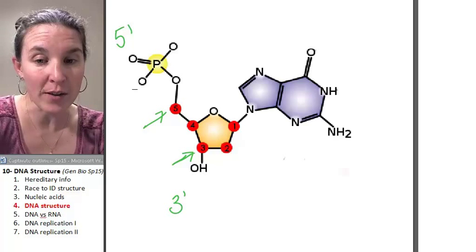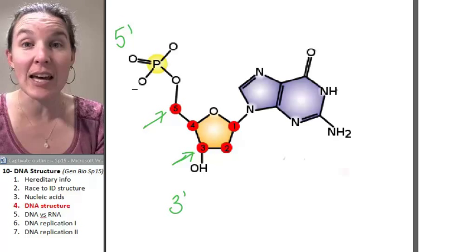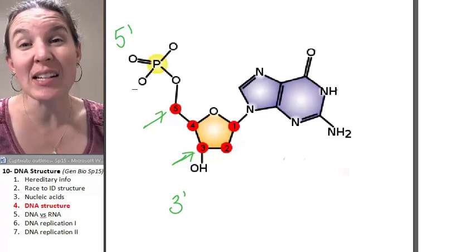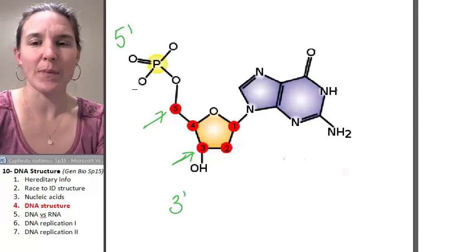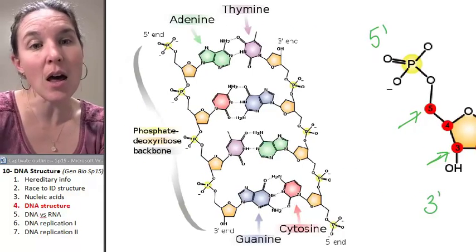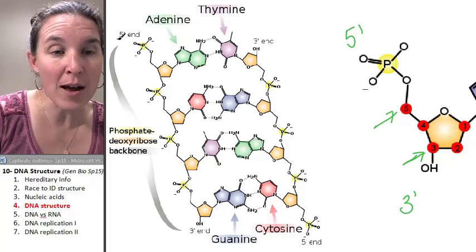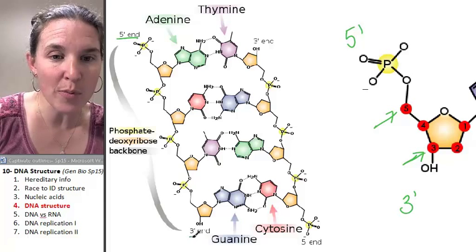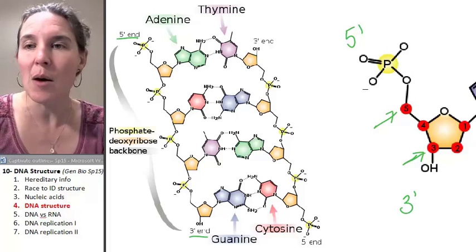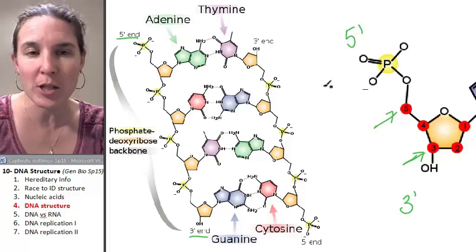Now we're going to put several nucleotides together into a DNA molecule, which is a double helix. We've even got our five prime end and our three prime ends labeled on this drawing, and it makes complete sense — it's beautiful.